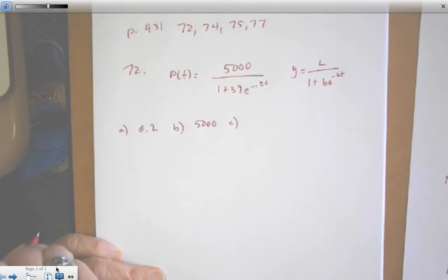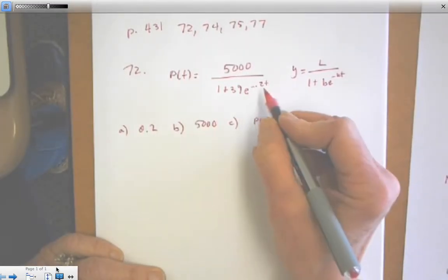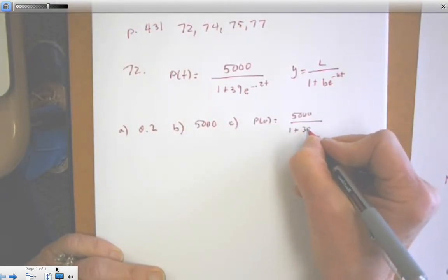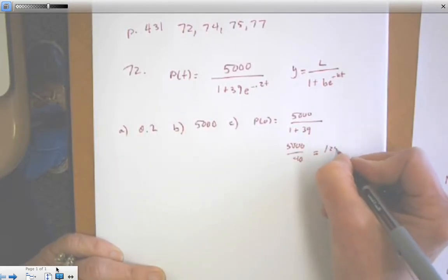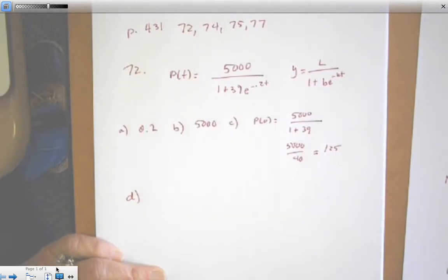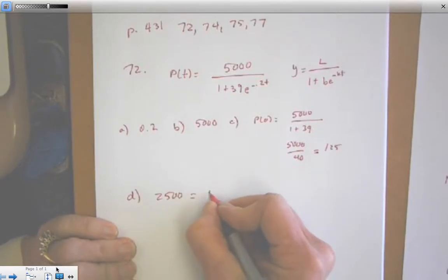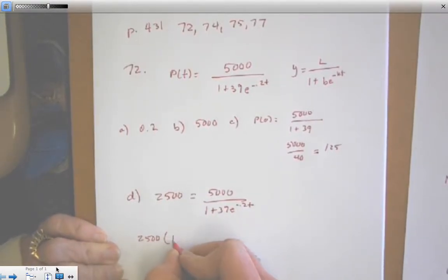Part C, find the initial population. So we're going to find P of 0. It means you plug 0 in for T, and anything to the zero power is 1. So 5,000 over 40, and we're going to get 125. Part D asks to determine when the population will reach 50% of its carrying capacity. So 2,500 equals 5,000 over 1 plus 39E to the negative 0.2T.